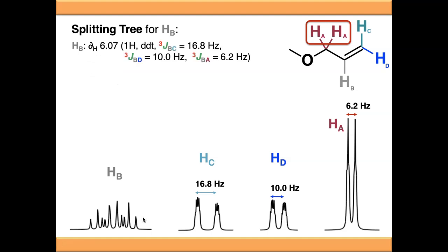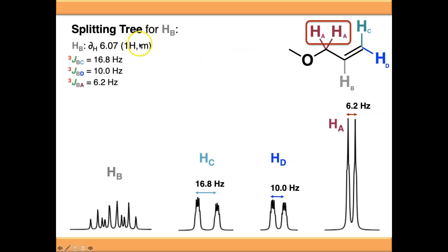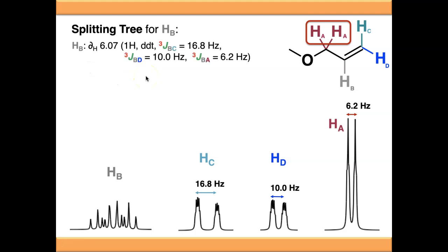All of this has allowed us to fully characterize that multiplet. We don't have to just describe it as a multiplet anymore and say we don't understand what's going on. We can actually use a splitting tree to help us, and we know now that this is a doublet of doublets of triplets - here are the J values that we've worked out as part of it.